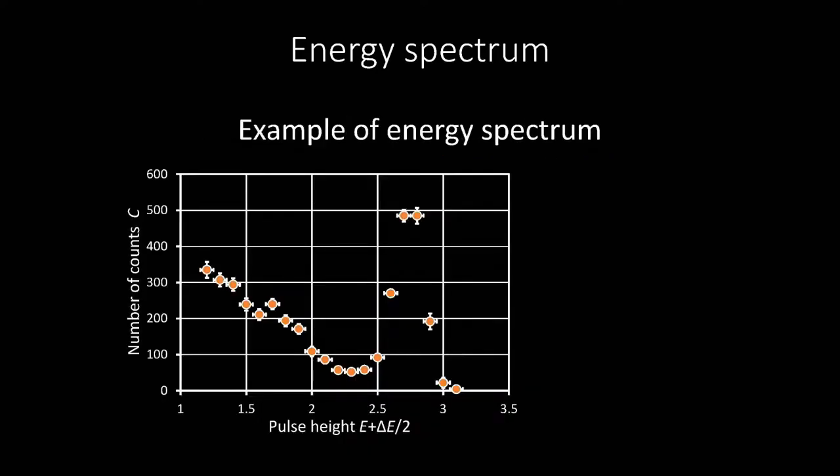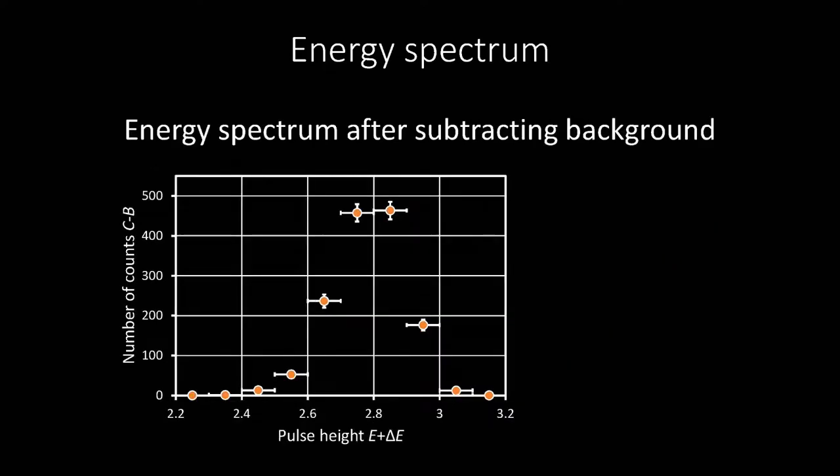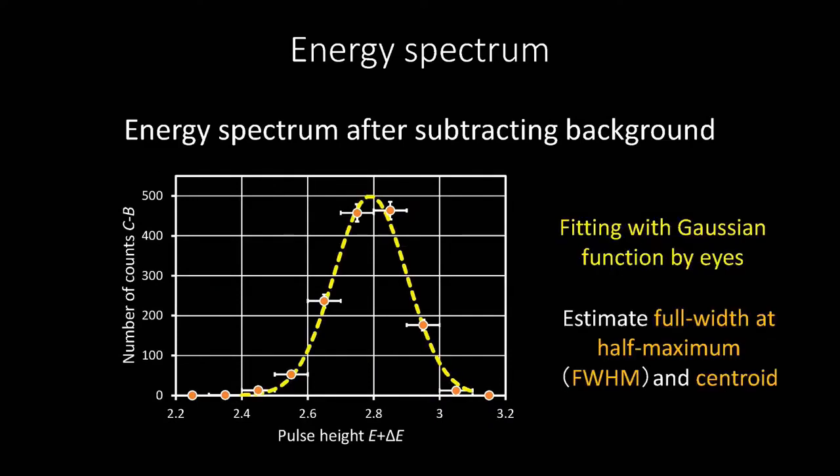This graph is an example of measurement results. Below the peak area, there is supposed to be a background. Estimate the amount of background by assuming a linear background shape. Subtract the background from the number of counts, C. After subtracting the background, the graph should look like this. Apply the Gaussian function to this graph by eyes and estimate the full width at half maximum and the centroid. The full width at half maximum is the horizontal width of the peak at the height of a half value of the peak maximum.